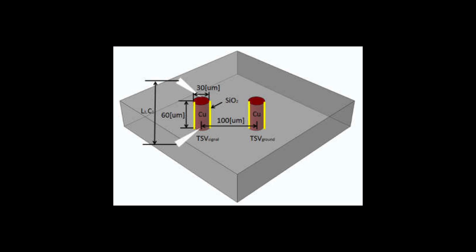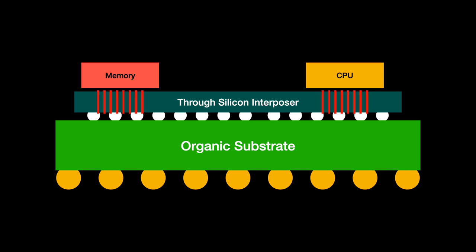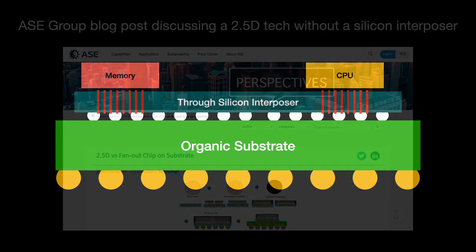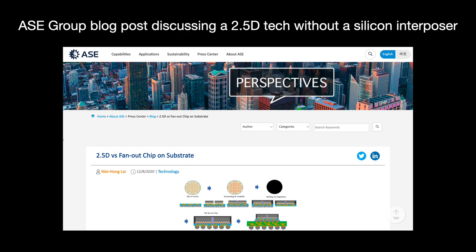2.5D does not require a significant re-engineering of the chips in question, so we can use conventional dies. With true 3D, the dies will have TSVs drilled through them, so they need to be significantly thinner. A significant disadvantage of 2.5D compared to 3D is the additional cost of producing the silicon interposer itself, and it also represents another point of failure. One big issue AMD and its packaging partner ASE Group had to overcome was warpage in the silicon interposer. The industry is exploring new generations of 2.5D integration that remove the silicon interposer entirely, having chips sit right on top of the substrate.